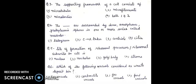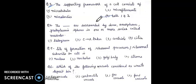Question 3: the supporting framework of a cell consists of — first, microtubules; second, microfilaments; third, microbodies; fourth, both 1 and 2. The answer to this question is fourth, both 1 and 2.